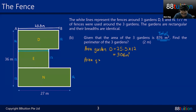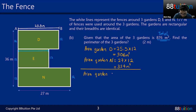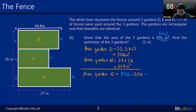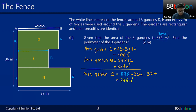We can also find the area of garden N. The total area of the three gardens is 876. Area of garden D is 306, area of garden N is 324. So the area of garden E = 876 − 306 − 324 = 246 square meters.